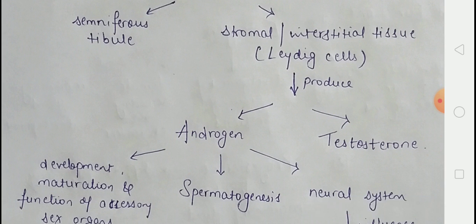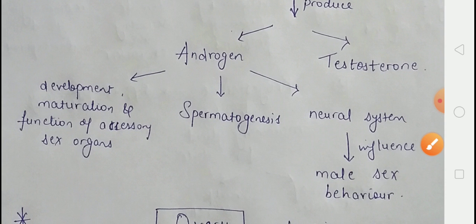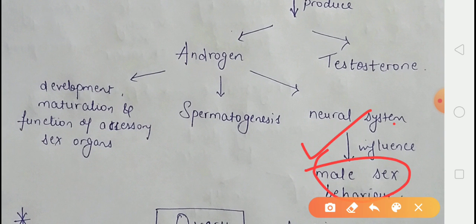Androgen hormone is responsible for the development, maturation, and maintenance of the accessory sex organs such as the epididymis, vas deferens, and seminal vesicles. These hormones also stimulate muscular growth, growth of facial and axillary hair, aggressiveness, and a low-pitched voice.